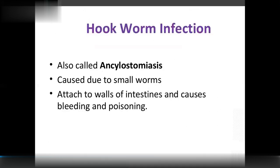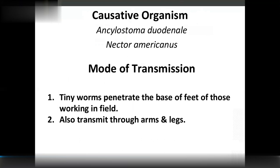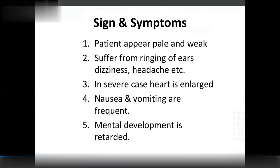Hookworm infection, also called Ancylostomiasis, is caused by small worms (Ancylostoma duodenale and Necator americanus) that attach to the wall of the intestine and cause bleeding and poisoning. Mode of transmission: tiny worms penetrate the skin through bare feet and also through arms and legs. Signs and symptoms: patient appears pale and weak, suffers from ringing in the ears, dizziness, headache, and in severe cases — heart enlargement (cardiomegaly), nausea, vomiting, and retarded mental development.